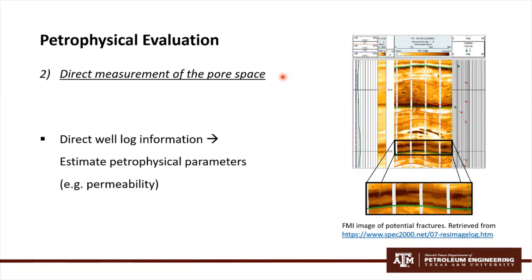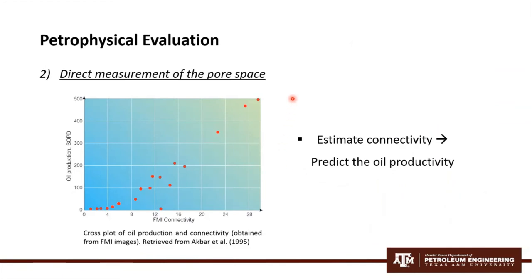The second approach is direct measurement of the pore space, using well log information to estimate petrophysical parameters such as saturation and permeability. For example, the FMI — fullbore formation microimager — can provide a direct image of the pore space near the borehole wall. This can be a key factor to estimate porosity in the formation. Here in the image, we can observe possible fractures, where the dark areas can be interpreted as pore spaces. The FMI can also be used to estimate the connectivity of pore spaces, which can be used to predict oil productivity, and this relationship is recognized on the plot here.